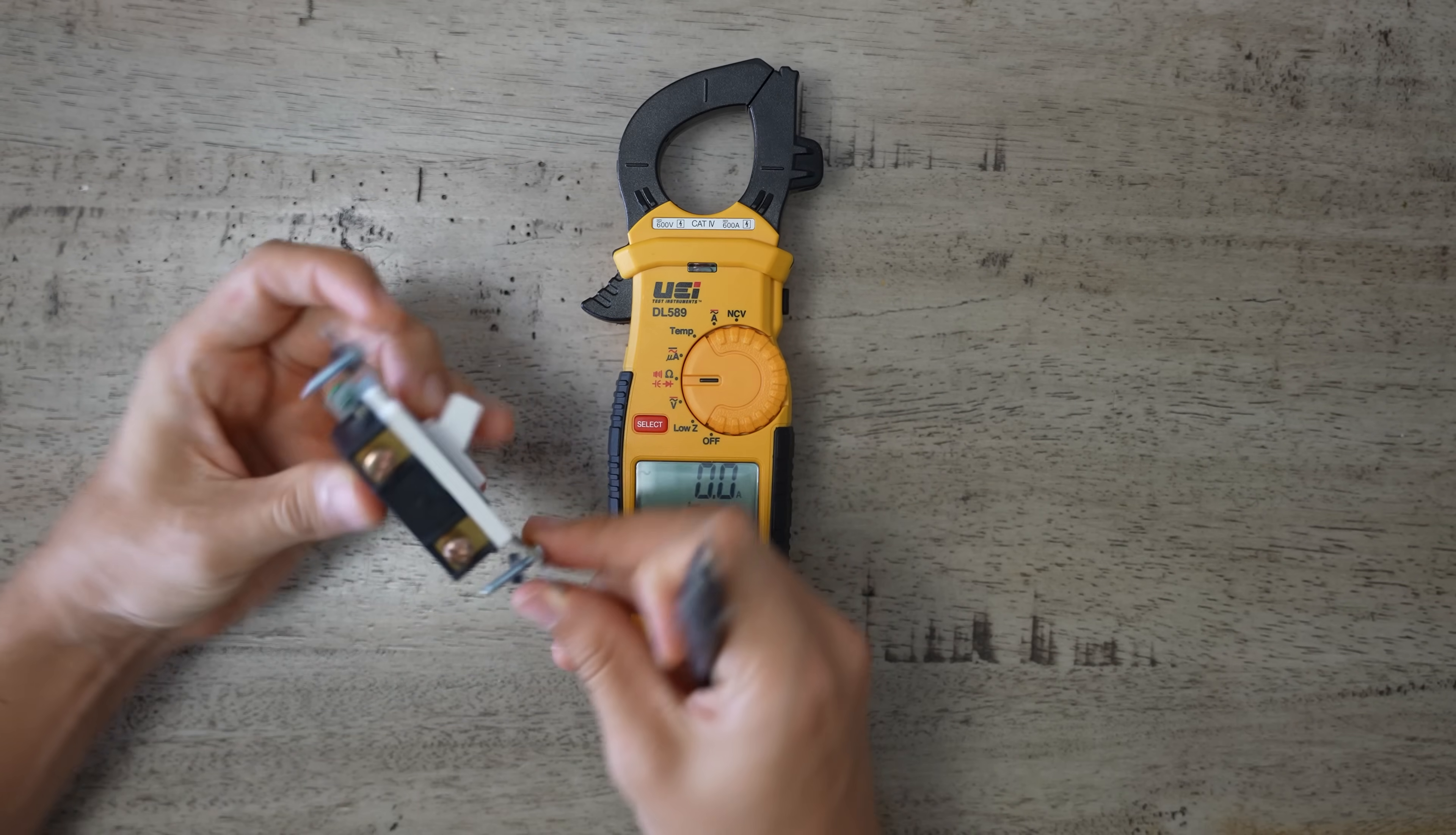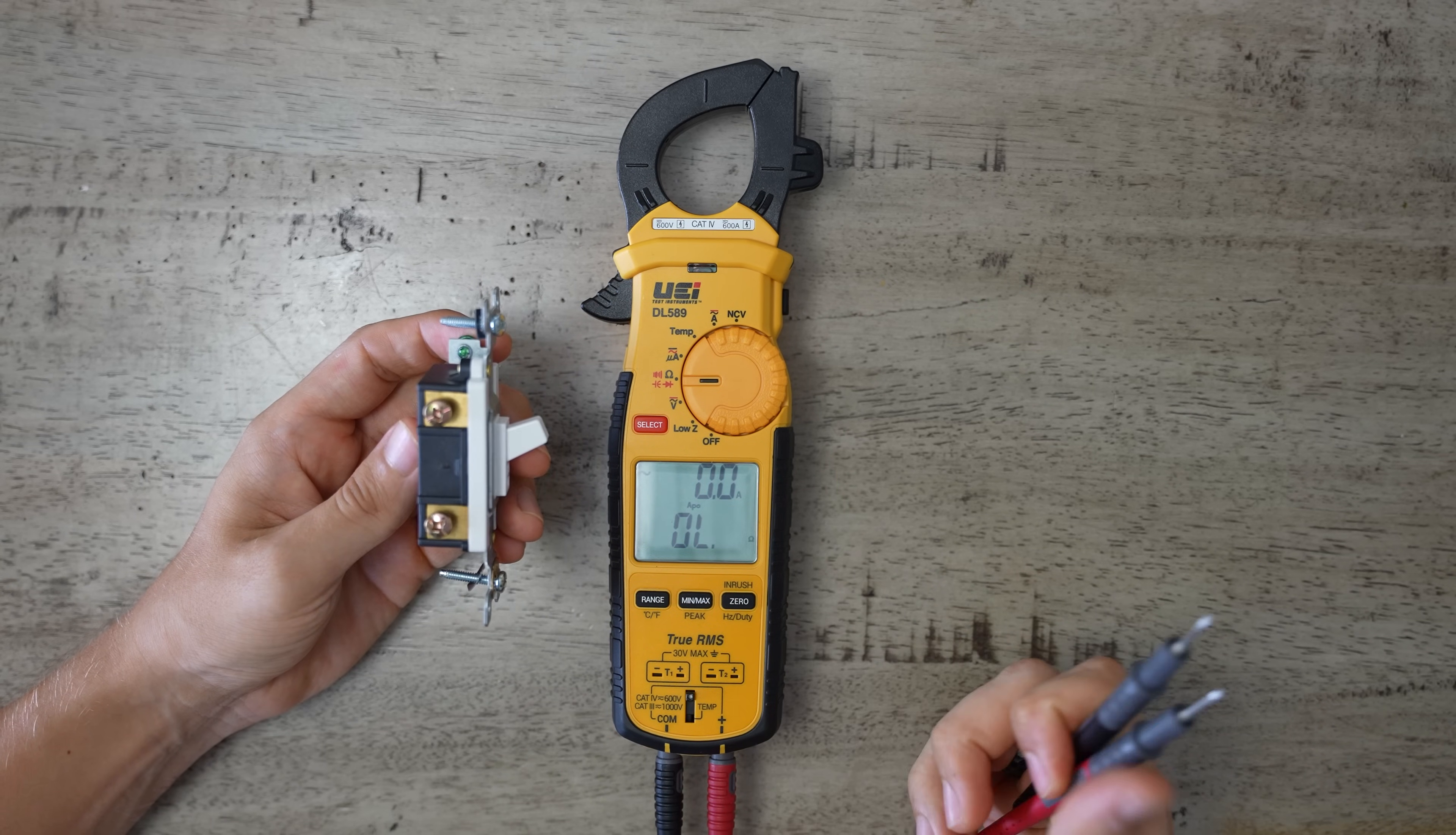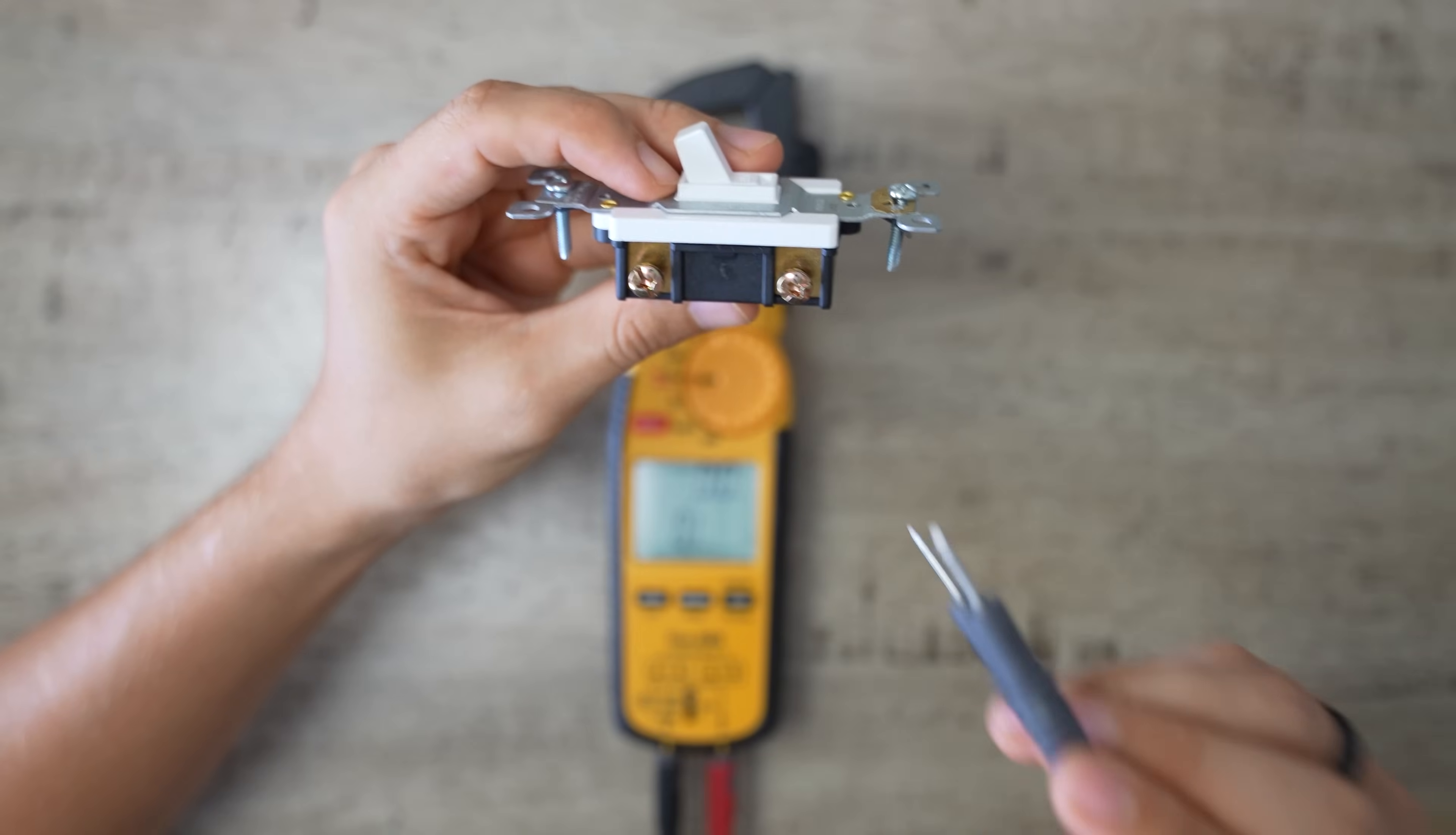For example, if we take this light switch right here, usually there will be wires going to it. If you wanted to check the resistance of this light switch, you have to take the wires off before you check the resistance, and the power has to be off. If the power is off, but the wires are still on, you're going to get a false reading, because you're also reading the wires along with the switch.